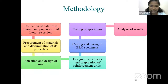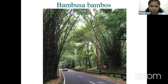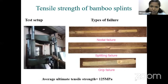The methodology includes literature review, procurement of materials and determination of properties, selection and design of concrete mix, design of specimens, preparation of reinforcement grids, casting, curing, testing, and analysis. Bambusa bambos is one of the best bamboos available all over Kerala, so we used that particular bamboo. We were provided Bambusa bambos culms by the Kerala Bamboo Flooring Tail Factory at Nallalam, Kozhikode.